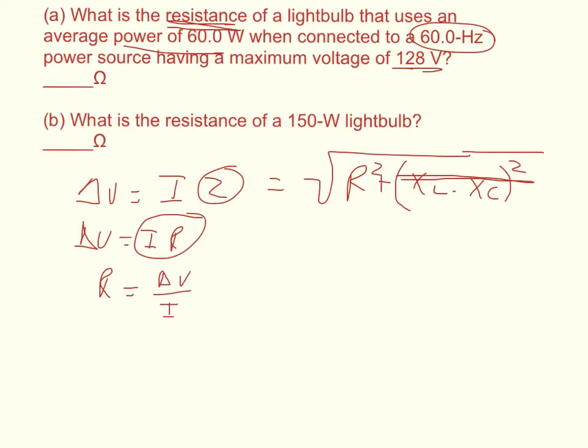This equation will work if we use delta V max and I max, the maximum voltage and maximum current, or we could use delta V rms and I rms, their root mean squared values. But we can't use both; we have to use one or the other. We're given average power, and the formula for average power is I rms times delta V rms times the cosine of phi.